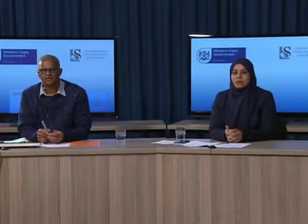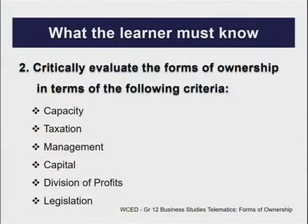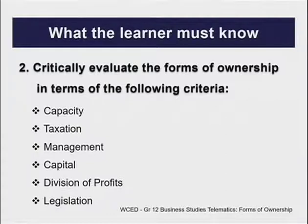The first thing learners should know is the criteria for forms of ownership. We are going to focus on information in the exam guidelines — they need to critically evaluate the forms of ownership in terms of the following criteria: capacity, taxation, management, capital, division of profits, and legislation.